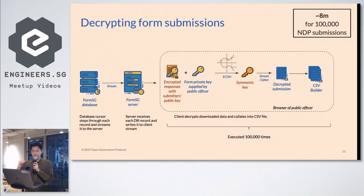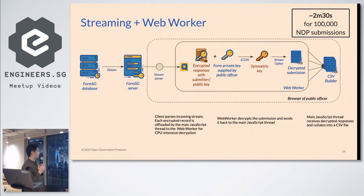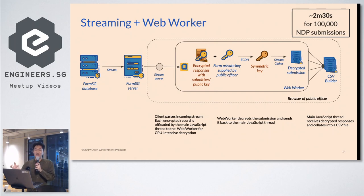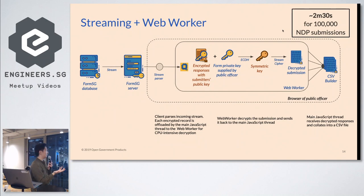There was still a problem: you have to execute the decryption 100,000 times for 100,000 submissions. That means your browser would freeze — the main thread gets choked up. The solution was to do streaming but with a web worker. We offload the compute-intensive work into a web worker, so the main JavaScript thread posts data to the web worker to run on a separate thread, so you don't freeze up browser rendering or user interactions. When we did this, it was reduced from 8 minutes to 2 minutes 30 seconds.